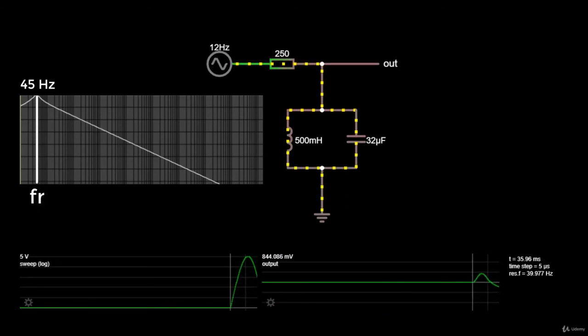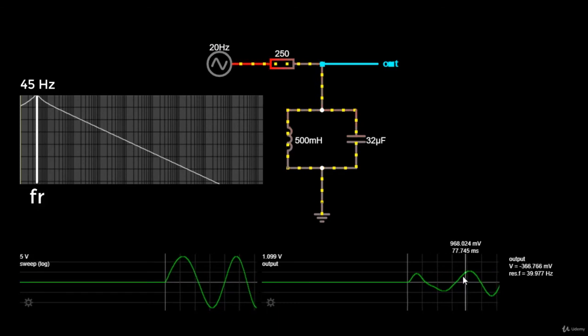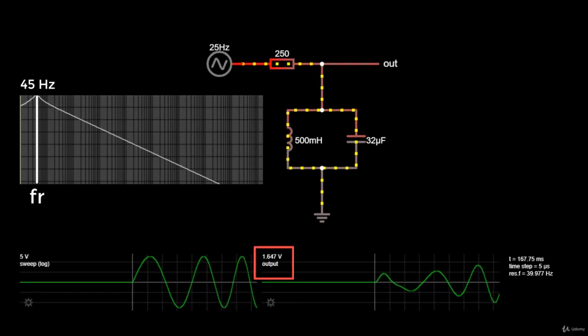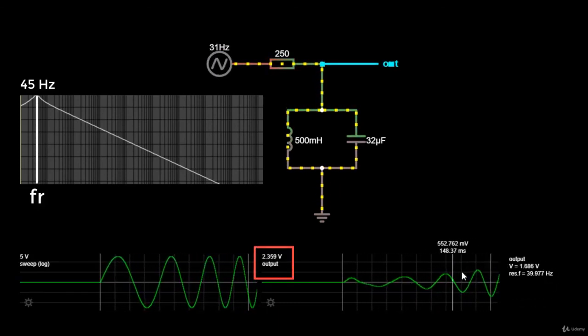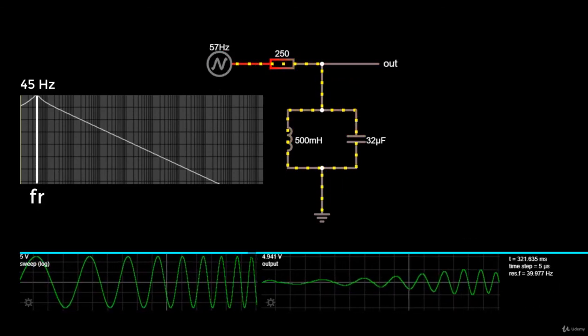Alright, the simulation has started. And as you can see, the signal below 45 Hz is attenuated, but as the frequency gets closer to 45 Hz, the amplitude starts increasing.